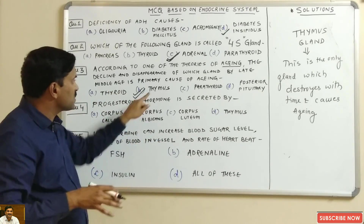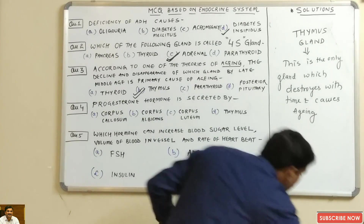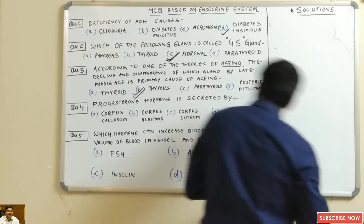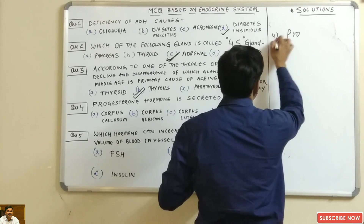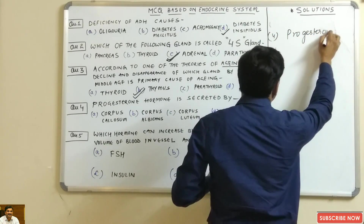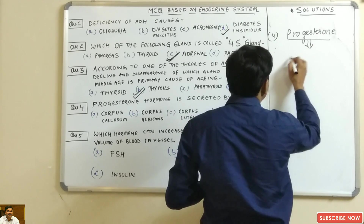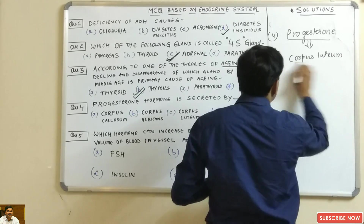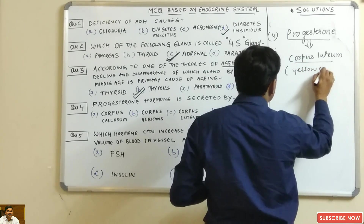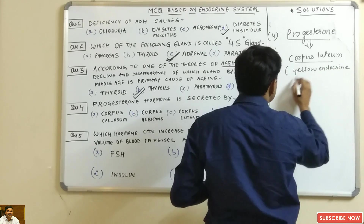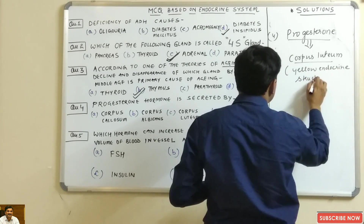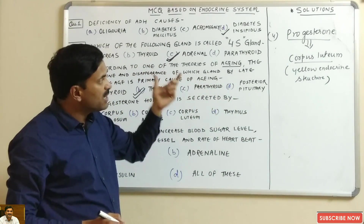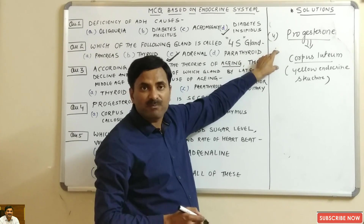So the answer is the thymus gland. Now the fourth question: progesterone hormone is secreted by what? This hormone is very important. Progesterone is secreted by the corpus luteum, which is a yellow endocrine structure. The question then arises: from where is the corpus luteum formed?